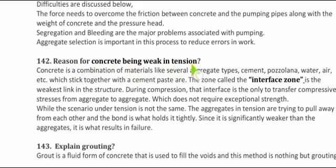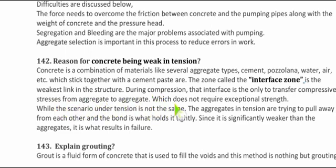Question 142: Why is concrete weak in tension? Concrete is a combination of materials — aggregates, cement, pozzolana, water, air — held together by cement paste. The interface zone is the weakest link. During compression, the interface transfers compressive stress from aggregate to aggregate, which does not require exceptional strength. However, under tension, the aggregates try to pull away from each other, and since the bond is significantly weaker than the aggregates, it results in failure.